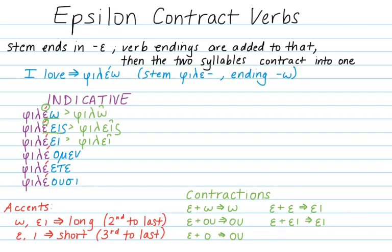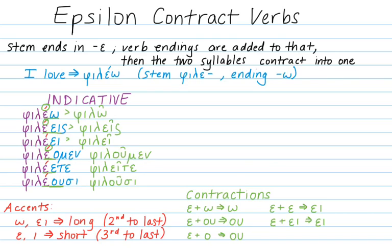In the first plural, epsilon-omicron contracts to 'oo,' and because there was an accent on that epsilon, there is now a circumflex on 'oo,' giving us philoûmen. Epsilon-epsilon contracts to eta, giving us phileîte, and epsilon-upsilon contracts to 'oo' with a circumflex, giving us philoûsi.